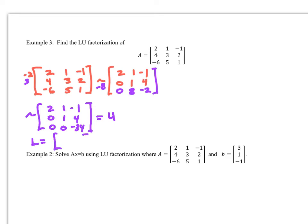Then eliminate the 8 in position (3,2) by multiplying by -8 and adding. That gives us U. For L, place the recorded multipliers — with opposite signs — into the lower triangular positions. So -2 becomes 2, 3 becomes -3, and -8 becomes 8, with ones on the diagonal and zeros elsewhere.